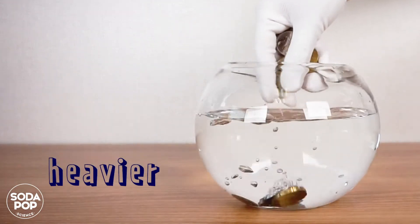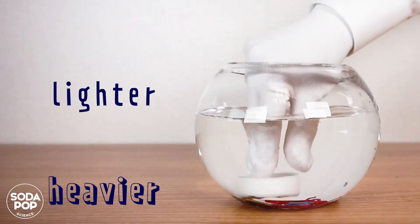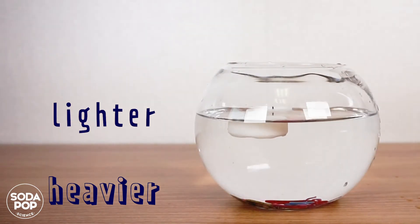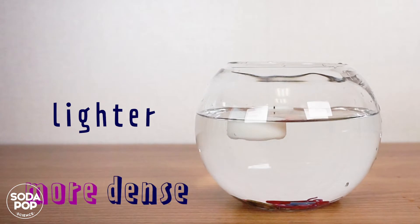Just like this, heavy liquid sinks to the bottom, while light liquid floats to the top. In science, we use the words more dense and less dense instead of heavier and lighter.